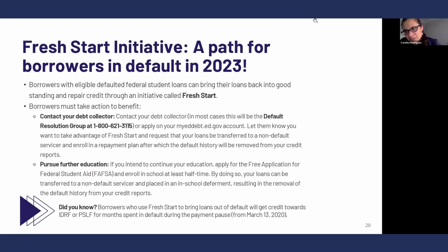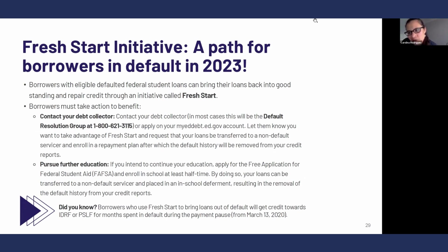If you have Parent PLUS loans or any loans in default, there's a new initiative called Fresh Start where it takes about 10 to 15 minutes to make a call to the debt collector known as the Default Resolution Group at 800-621-3115. You would call them and say you want to take advantage of Fresh Start and get your loans back in good standing. If your loans were in default during COVID, you could potentially get that time period counted towards the forgiveness program. If you're going back to school, you could get them out of default by simply filing the FAFSA and enrolling in school.